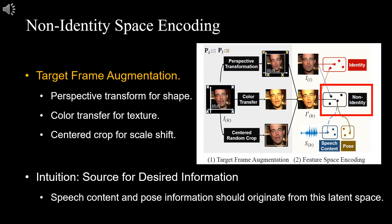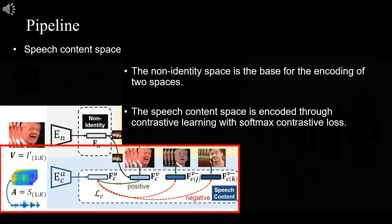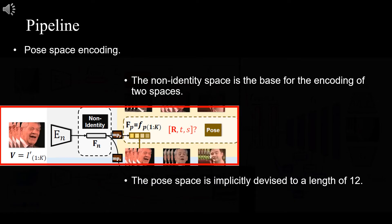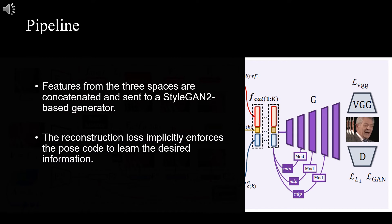This is achieved by performing three types of frame augmentation. The intuition is that this non-identity space can serve as a source for desired speech content and post information. Afterwards, by adding an MLP, the speech content space can be encoded through contrastive learning with softmax contrastive loss. Mapped also from the non-identity space, with an implicitly derived 12-dimension postcode without any constraint. Finally, the features from the three spaces are concatenated and sent to a StyleGAN2-based generator. The reconstruction loss implicitly enforces the postcode to learn the desired information.